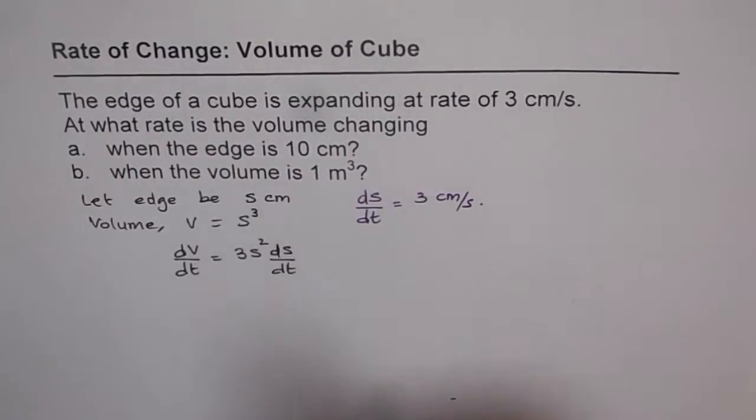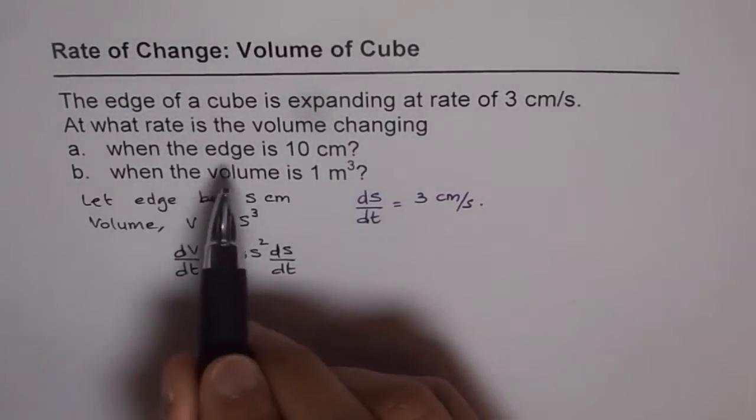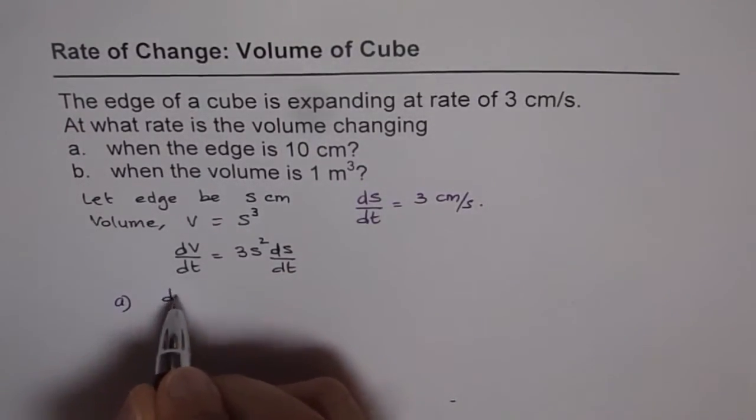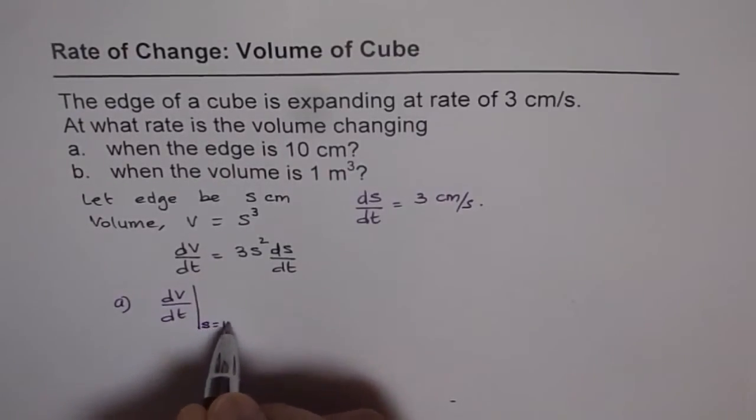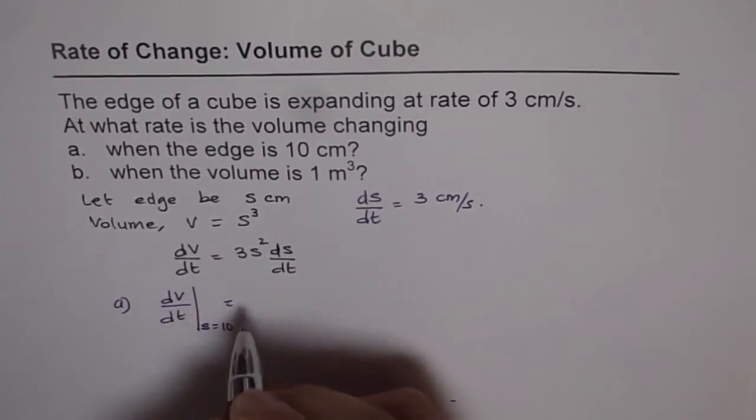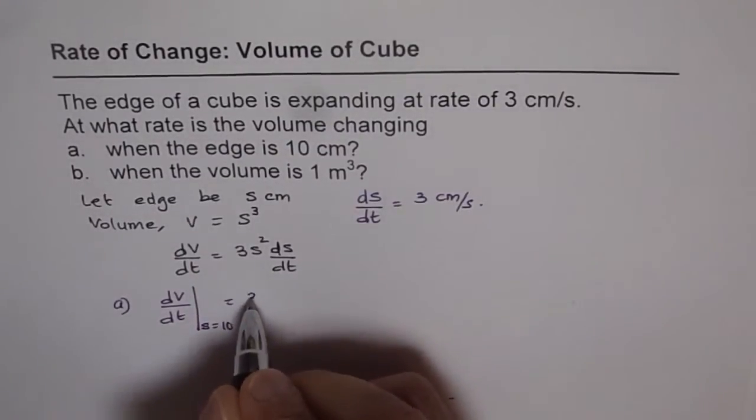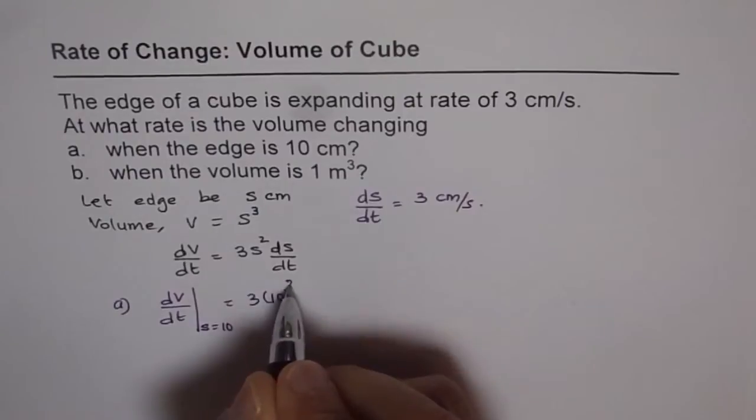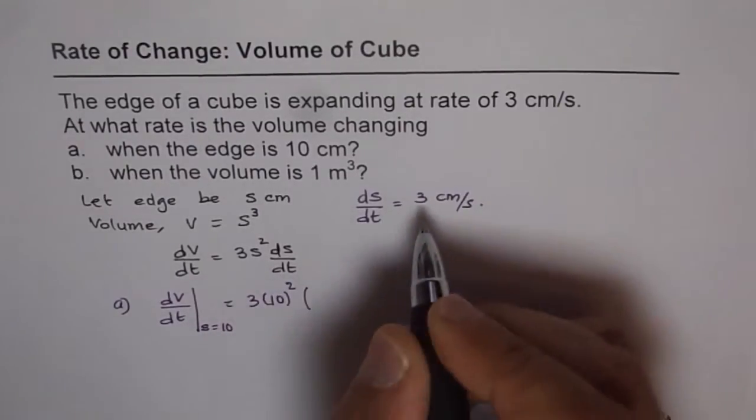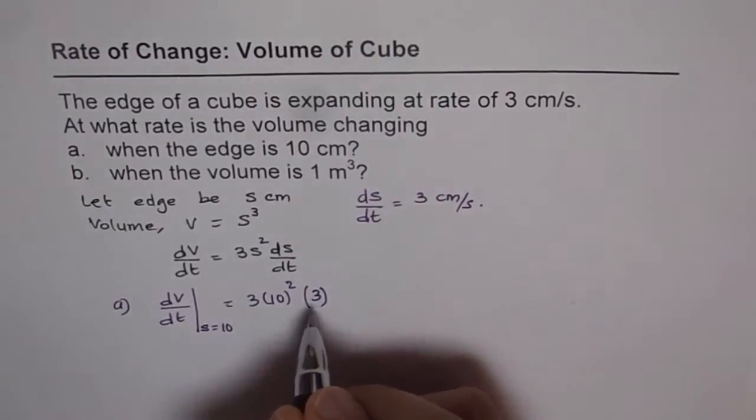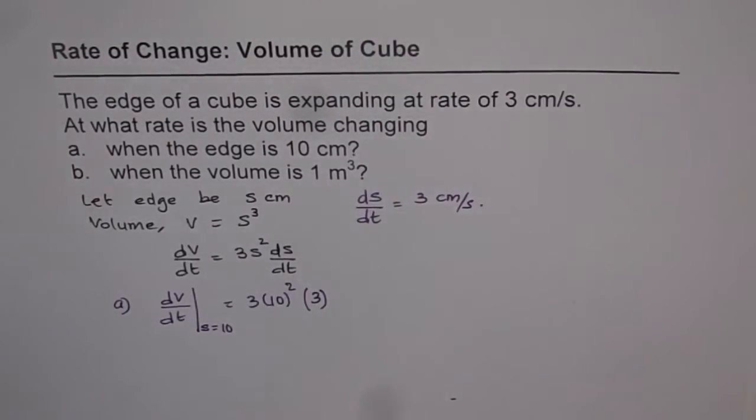Now the two parts are: one when edge is 10 centimeters, so that we can find straight away, that is part a. So what is dv/dt when s equals 10 centimeters? We will just plug in 10 here for s and 3 for ds/dt. So we get 3 times 10 square times 3 centimeters per second. We will write just 3 here and consider the units later.